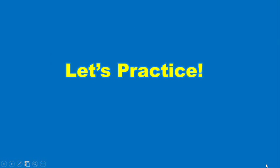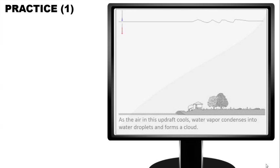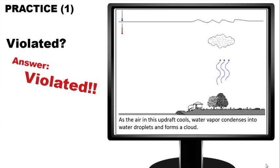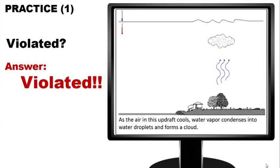Let's practice. Practice item number one: As the air in this abstract cools, water vapor condenses into water droplets and forms a cloud. The redundancy principle is violated.